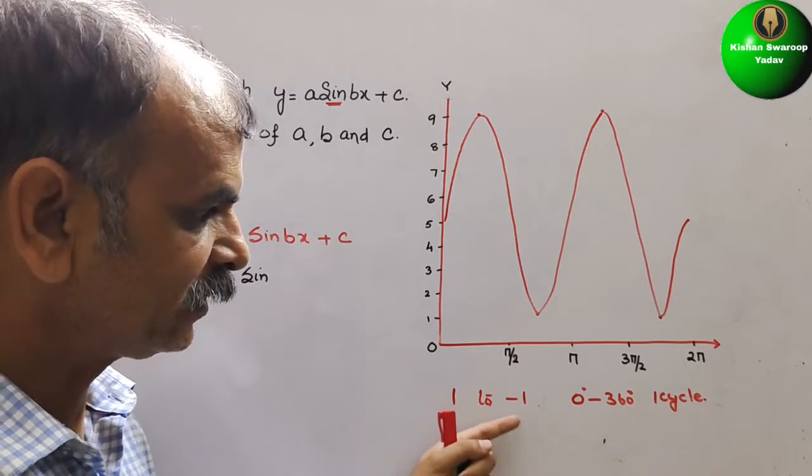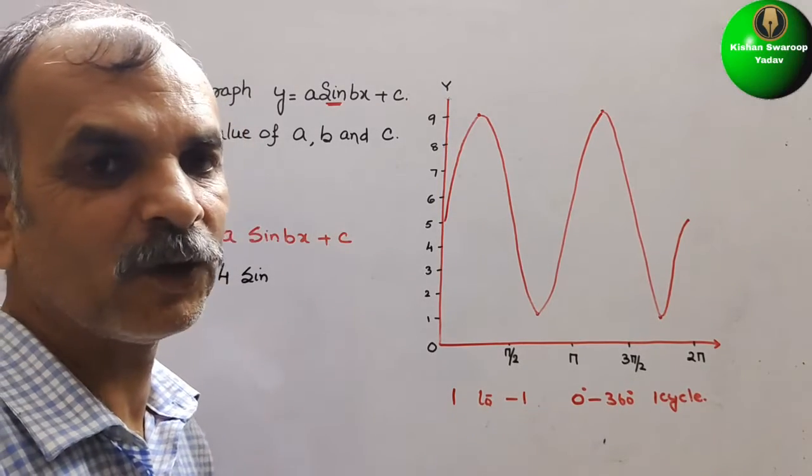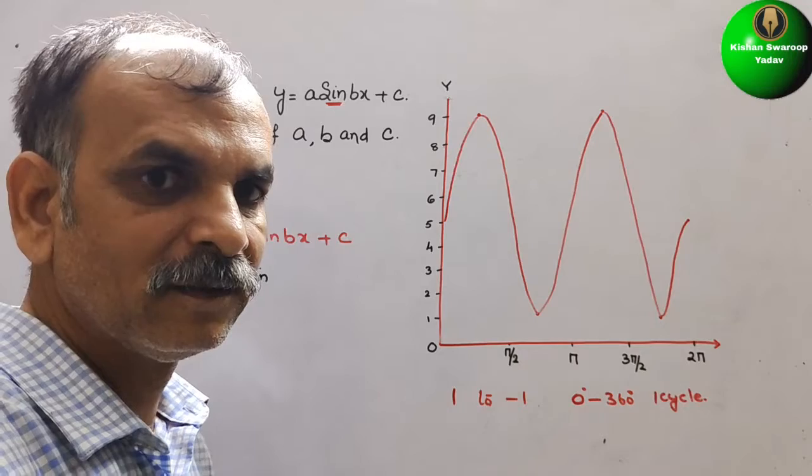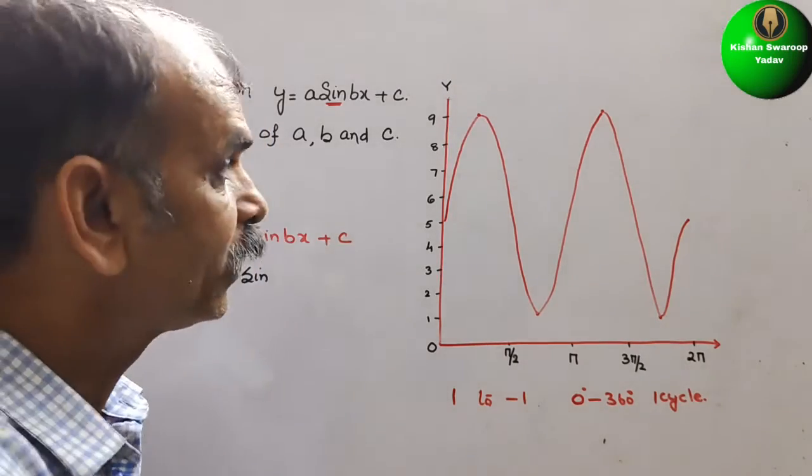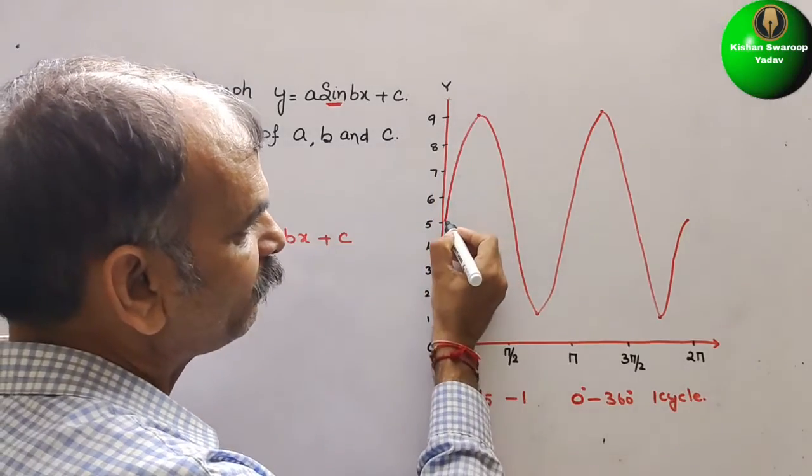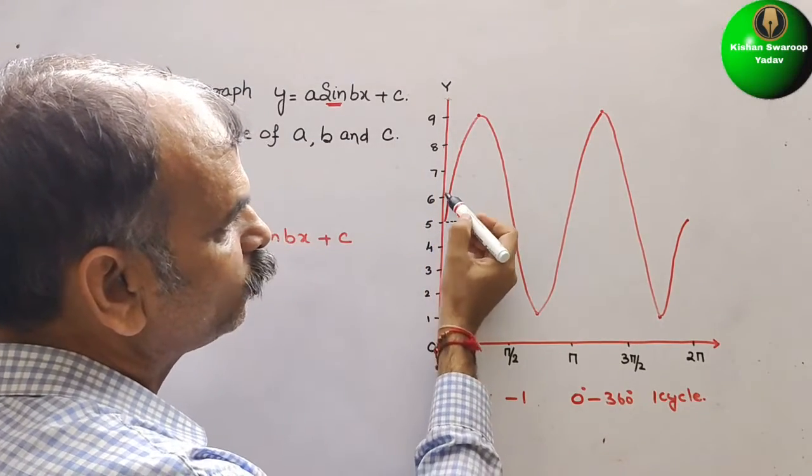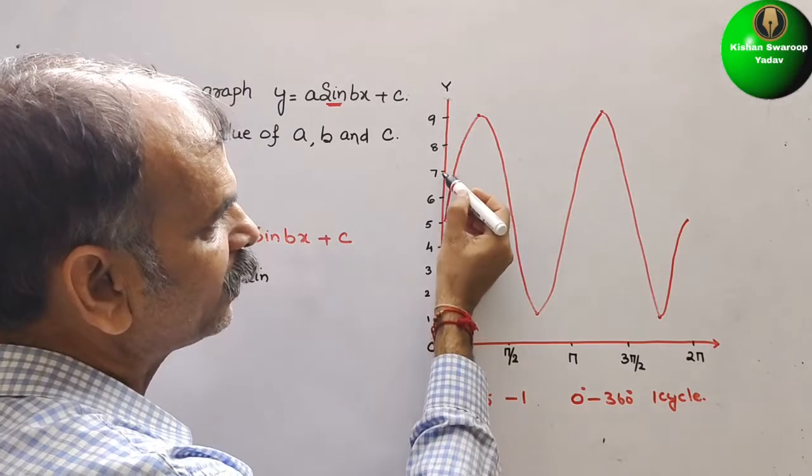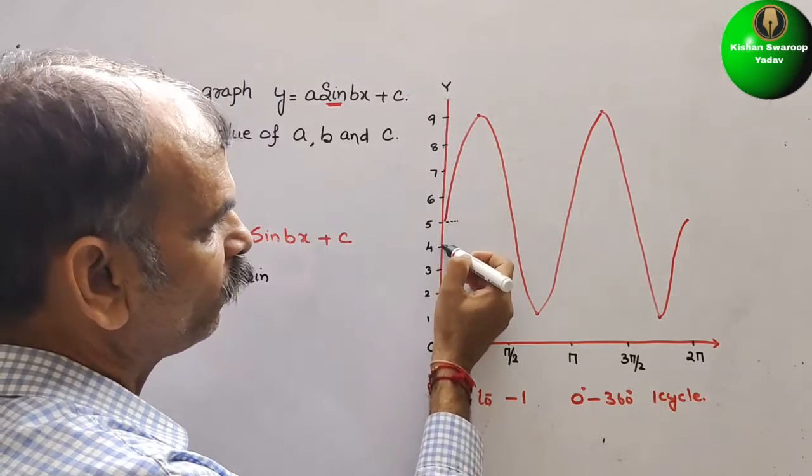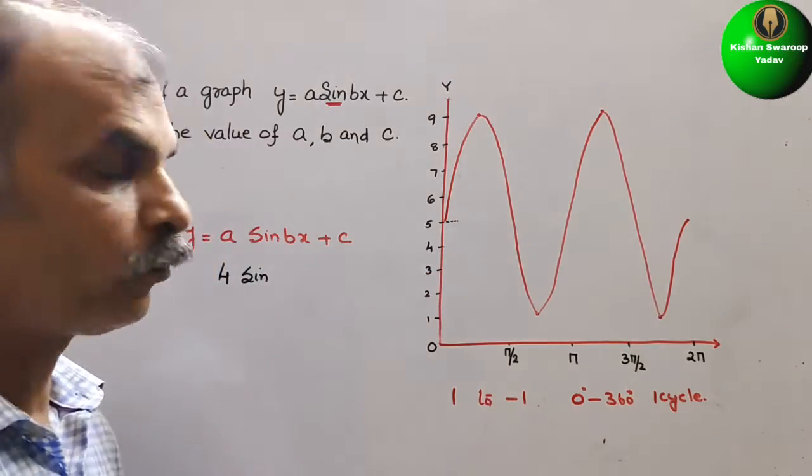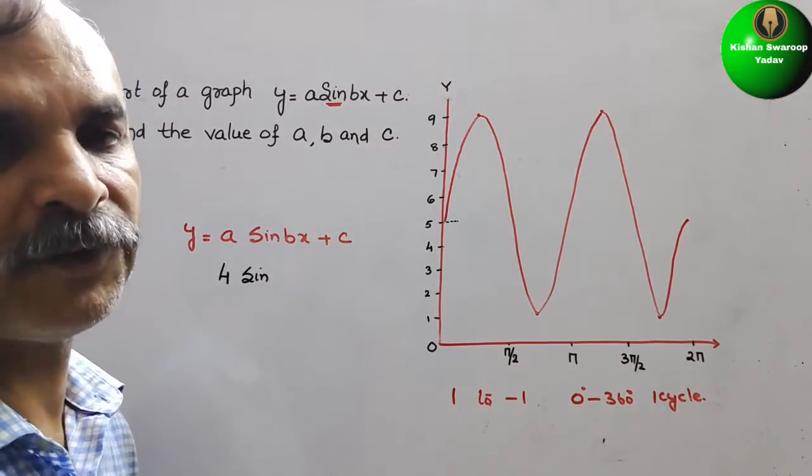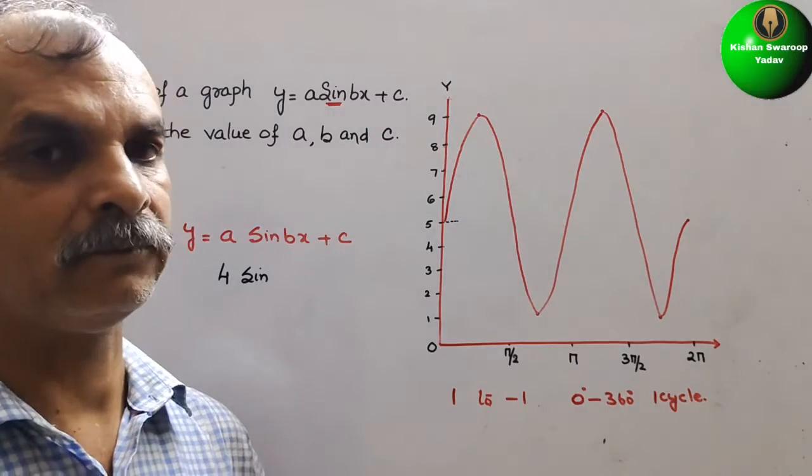Here see this 1 and minus 1 only there. So what is that? The mean is 0. Here the mean is what? 5 is the mean. So you can see 1, 2, 3, 4. 1 from here 1, 2, 3, 4. So 4 is your amplification factor. We have to amplify that.